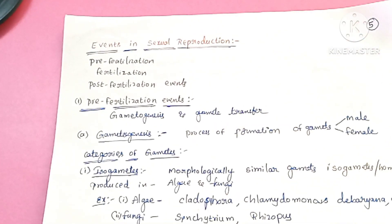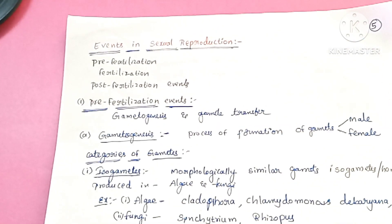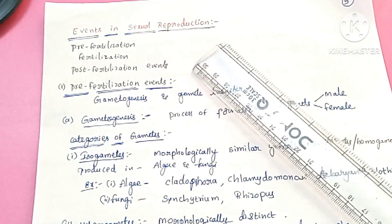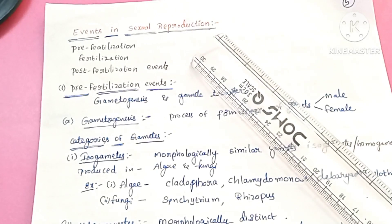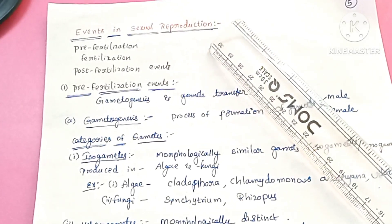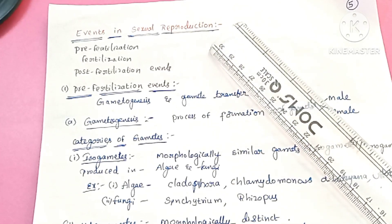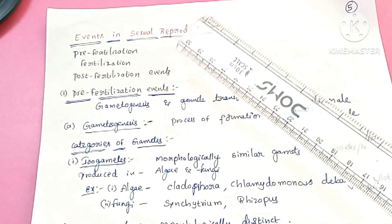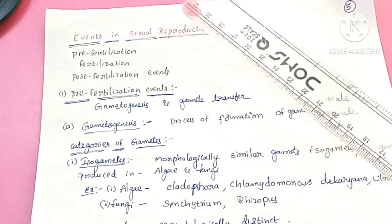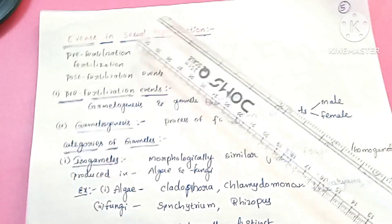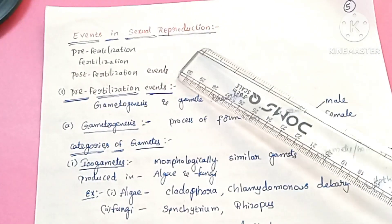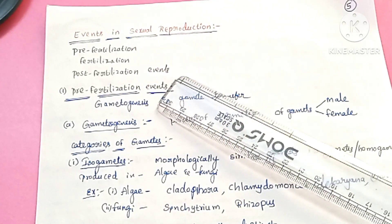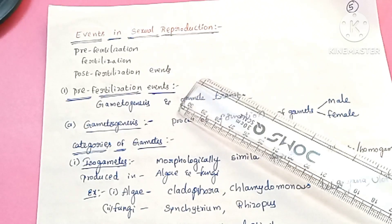Hello everyone, this is Latha Akula. Today we will learn about events in sexual reproduction. Sexually reproducing organisms exhibit sequential events. There are three distinct stages: pre-fertilization, fertilization, and post-fertilization events.